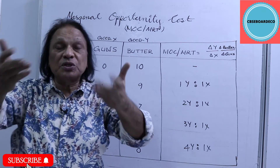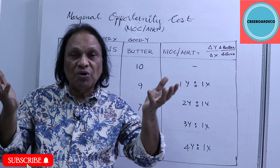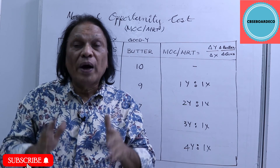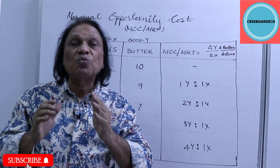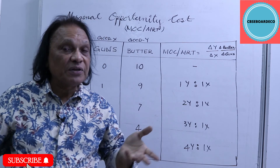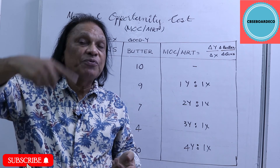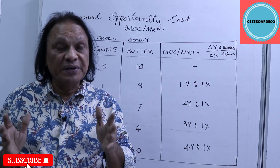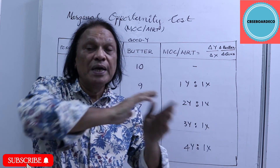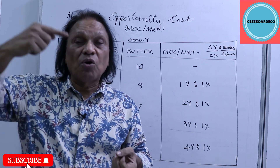So to summarize: Opportunity Cost is the cost of the next best alternative forgone — to produce wheat you sacrifice rice. Marginal Opportunity Cost is the rate of sacrifice of one commodity in order to produce one more unit of the other. Here the rate increases — 1Y, 2Y, 3Y, 4Y — to produce one more unit of X, because all resources are not equally efficient when diverted from one use to another.